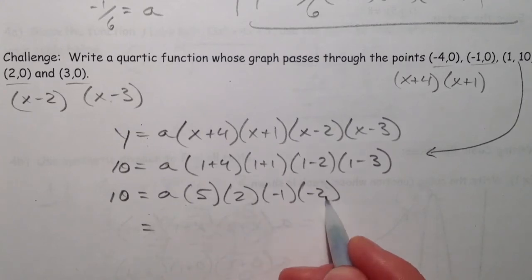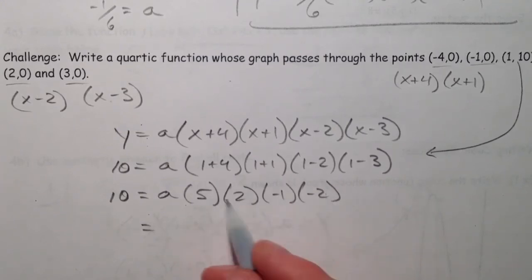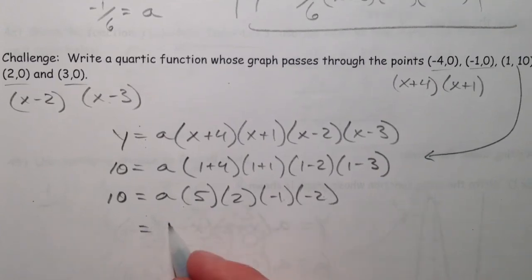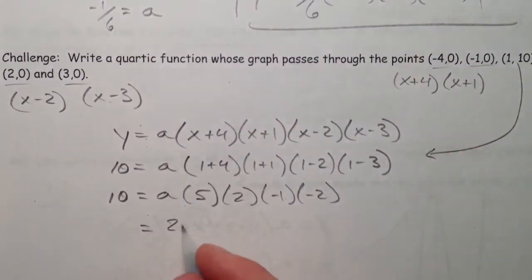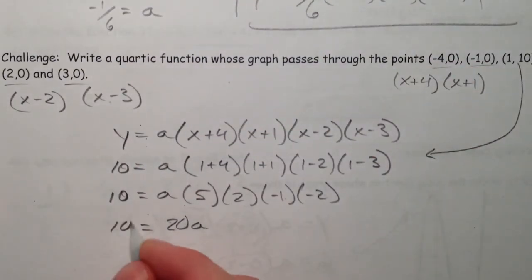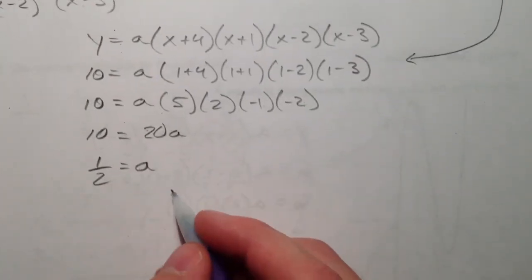And so, that's 5 times 4. 10, 10, sorry, 10, negative 10, 20. 20. Got ahead of myself in my writing. 20 times a. So, a equals 1 half. And so, y equals 1 half.